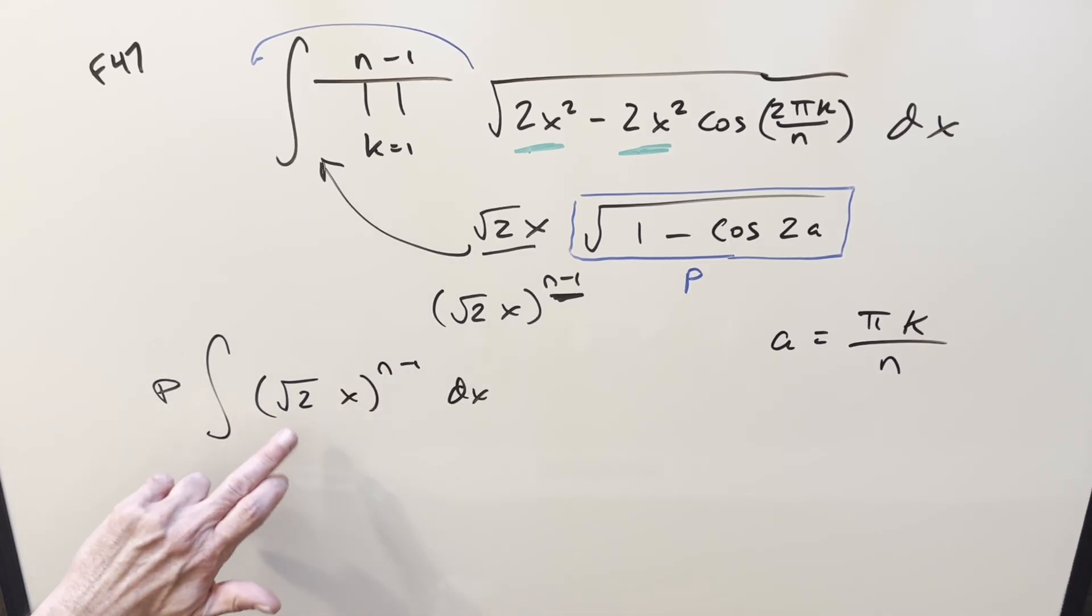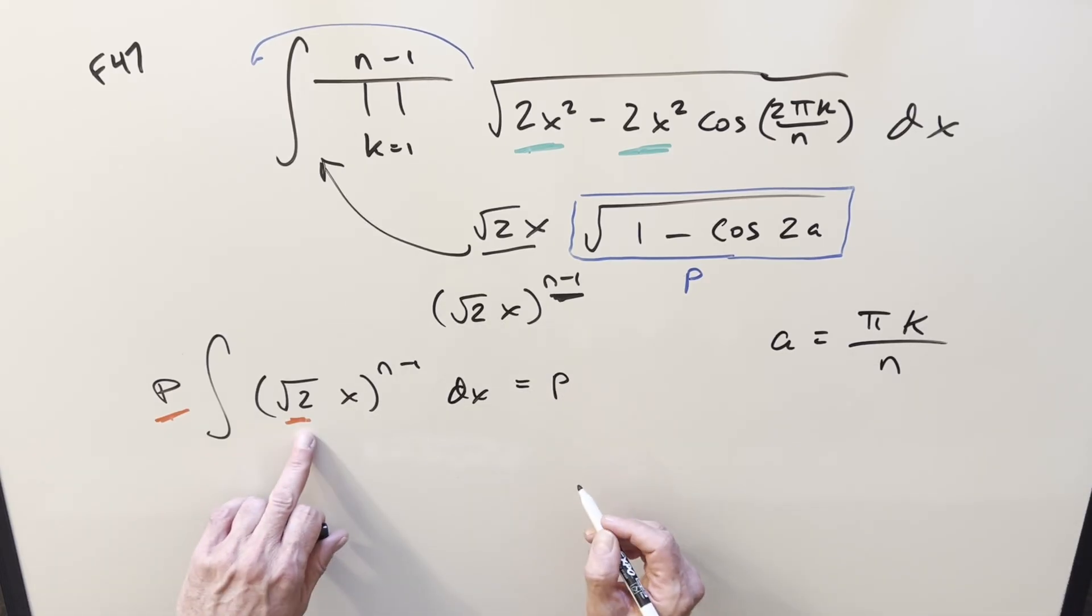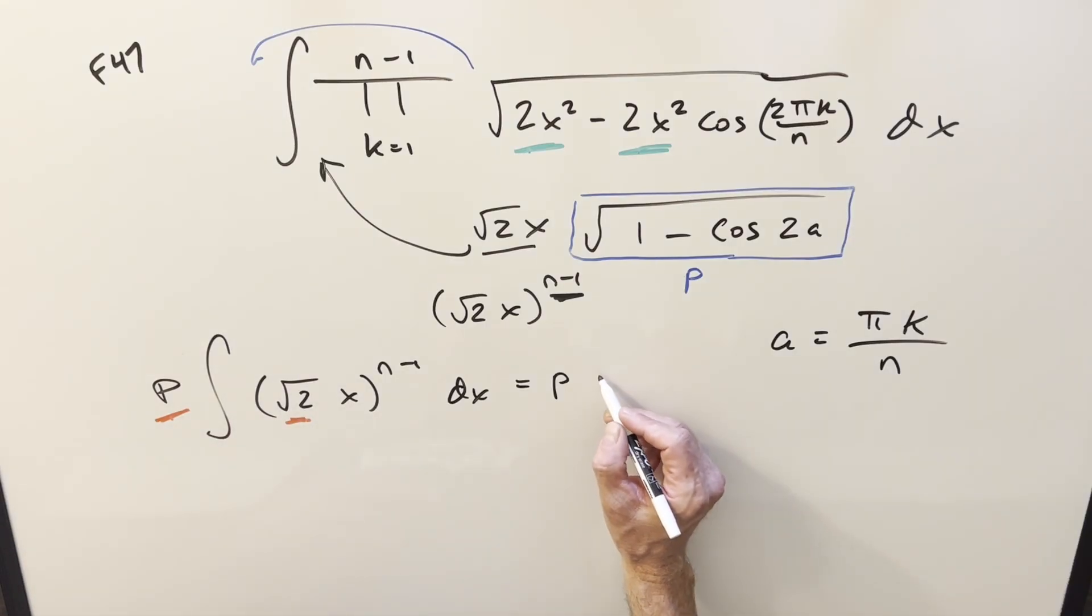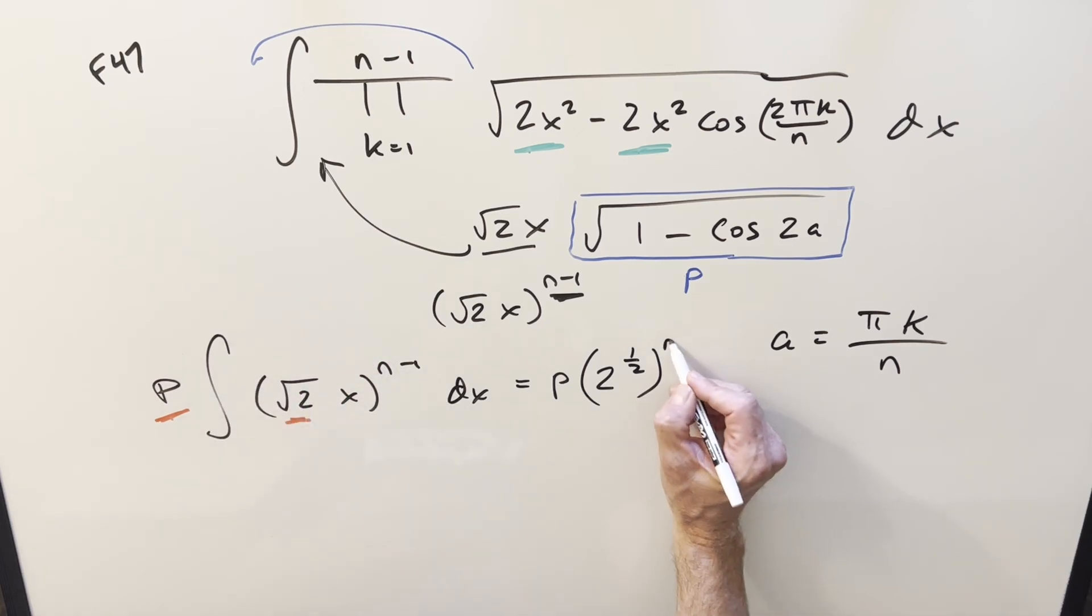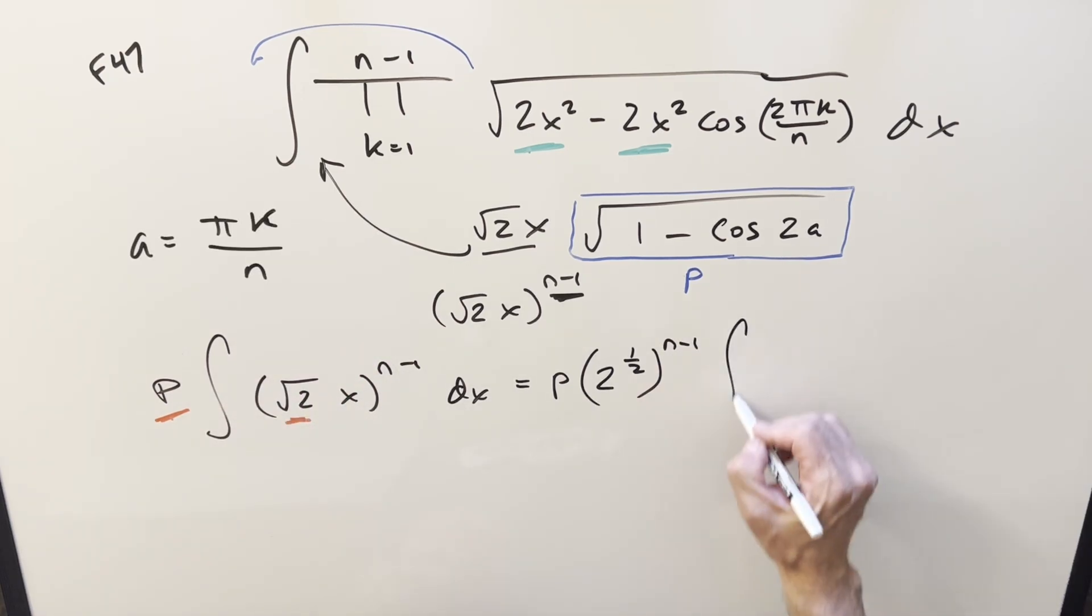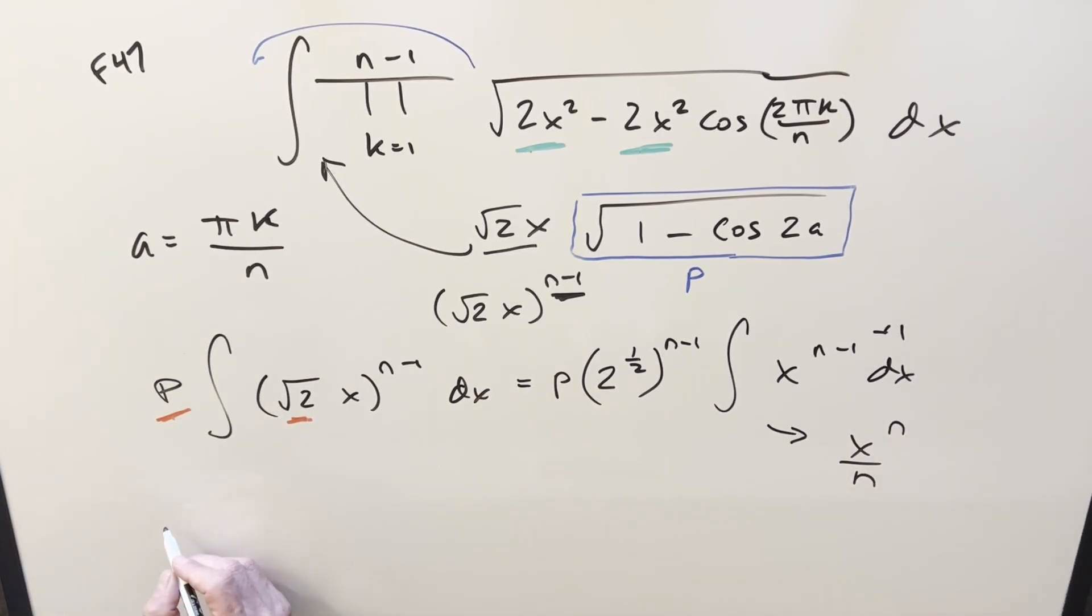But then I think you can see the actual integral is going to be really easy because this is power rule. This piece here is going to be a constant. Let me rewrite it before we do it. So let's take the constant out front. We still have the product. This thing, square root of 2, I can write as 2 to the 1 half, and then we're distributing in the n minus 1 power. But then the whole integral becomes just x to the n minus 1 dx. So this is just power rule. When we do this, adding 1 on the exponent, we just get x to the n over n.